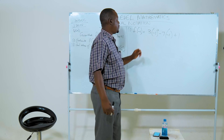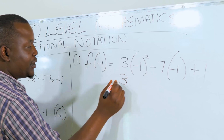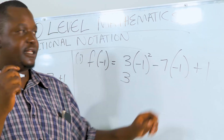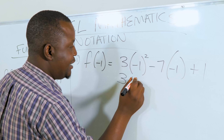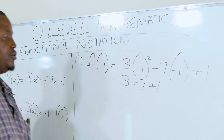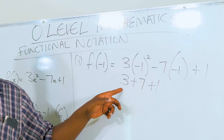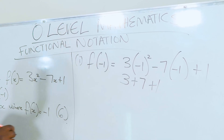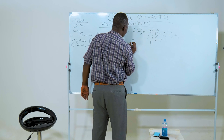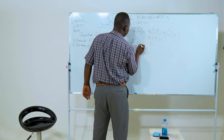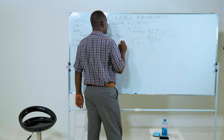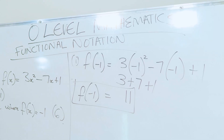So negative 1 squared is going to be positive 1. 3 times positive 1 gives us 3. Then negative 7 multiplied by negative 1 gives us positive 7, then plus 1. So 7 plus 3 is 10, and 10 plus 1 is 11. Which means that f(-1) is equal to 11.